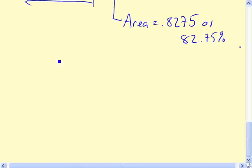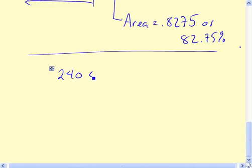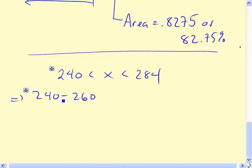So remember the inequality we're interested in here is 240 less than x less than 284. So we're going to standardize. Remember what we do is we subtract the mean, divide by the standard deviation. We're going to do that in all three of these entries here. So we've got 240 minus the mean, 260, divided by the standard deviation, 16.